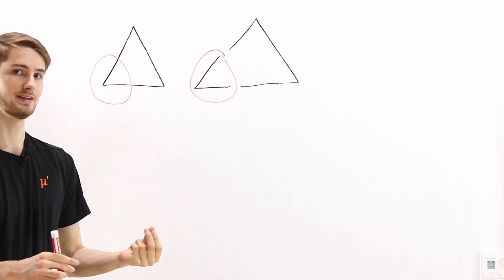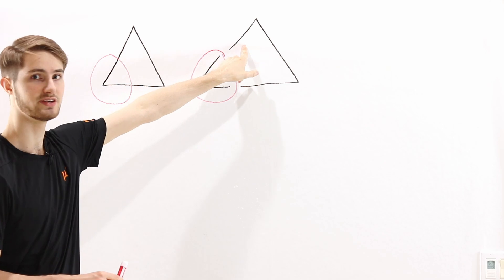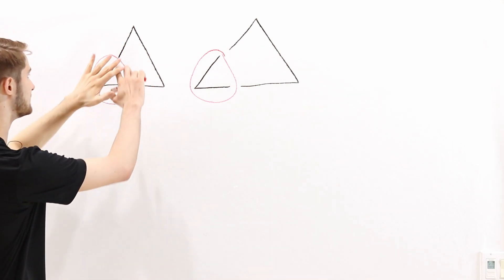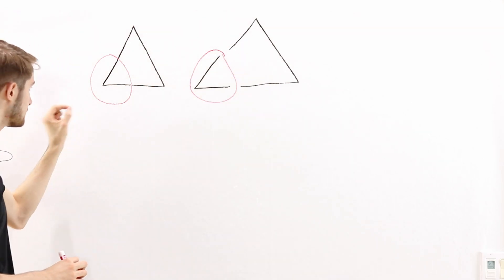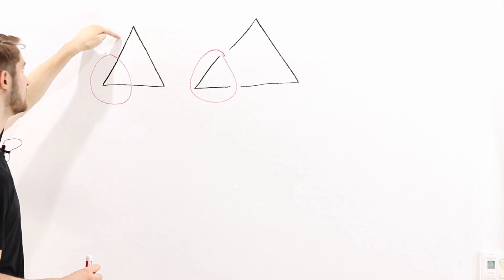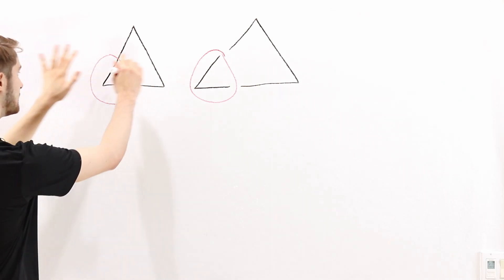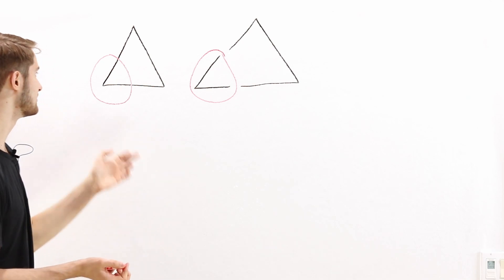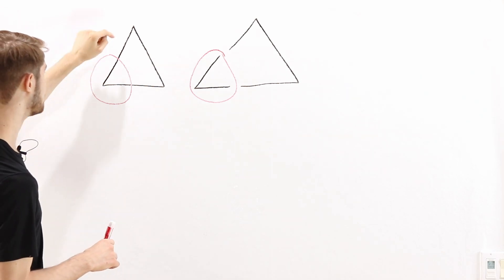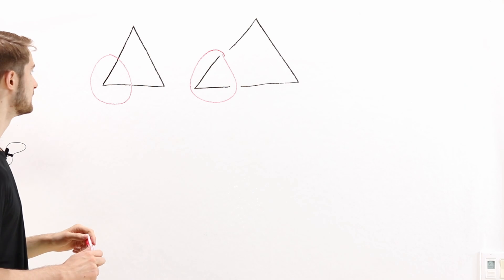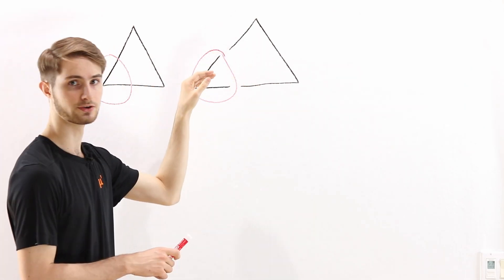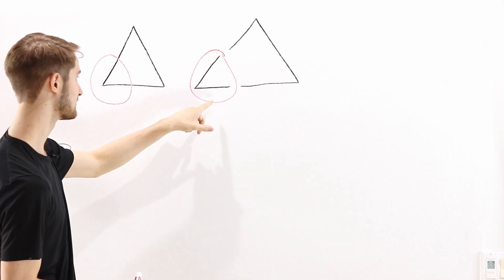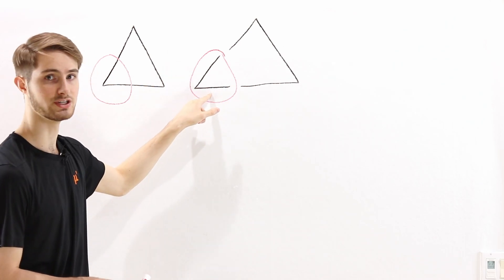Connectedness is a property of the topological space itself and its topology. When we say the triangle is connected, it's not important that it's a subset of R2. To define connectedness for arbitrary topological spaces, we want to look only at the topology on the points in the space, without drawing boundary circles that contain points outside the space.